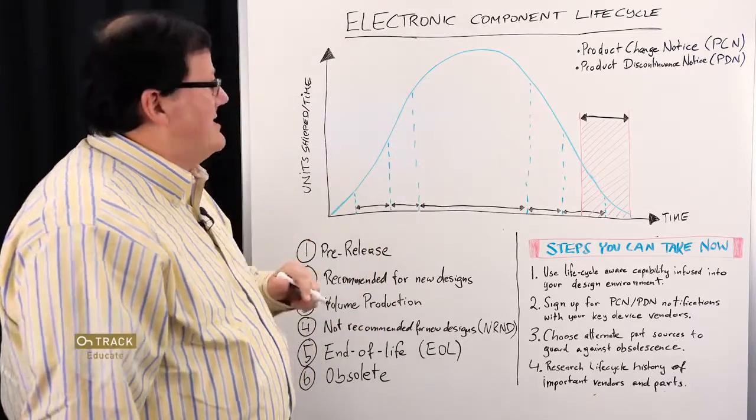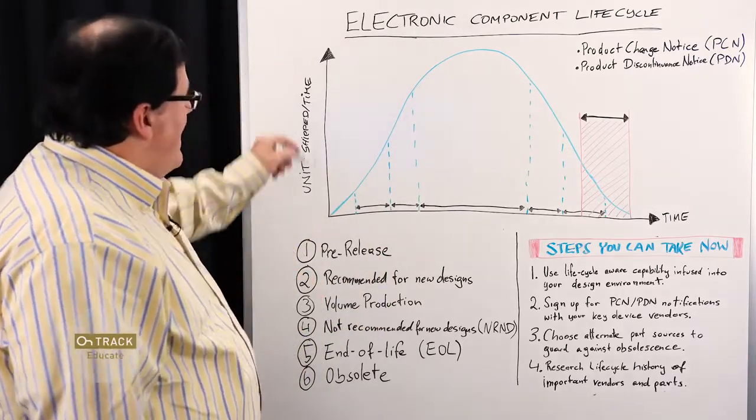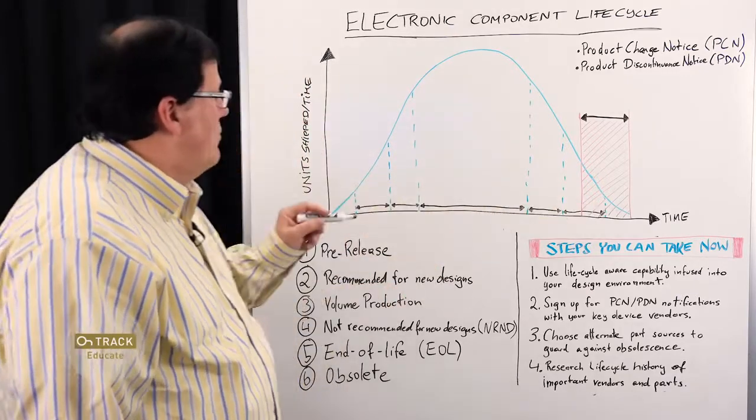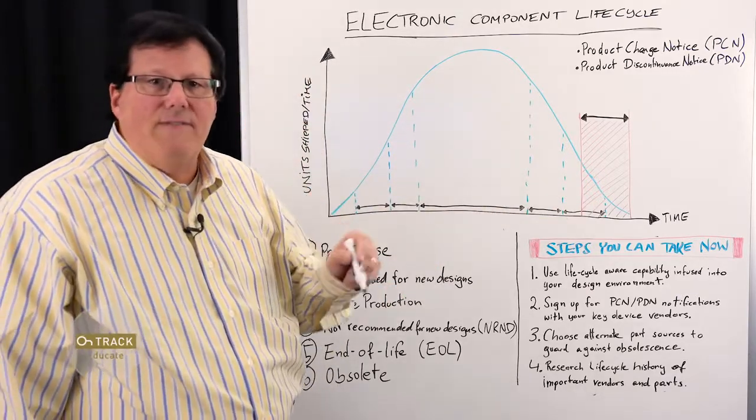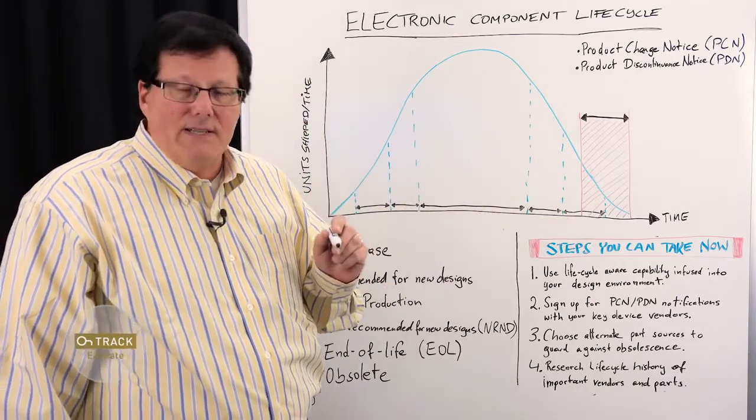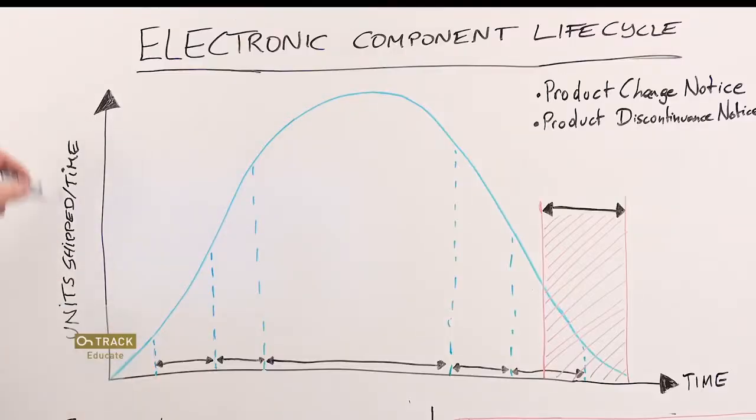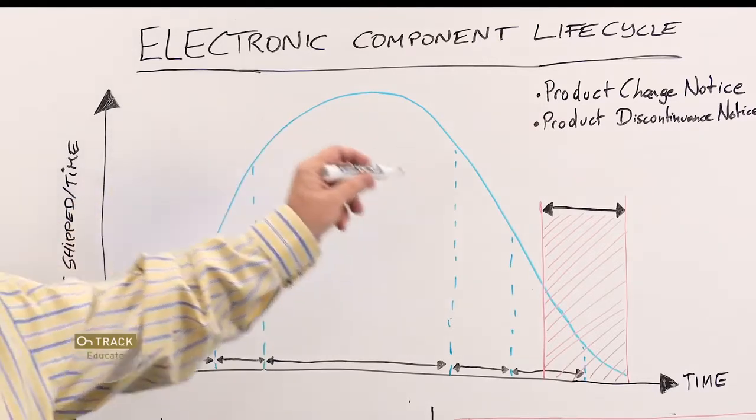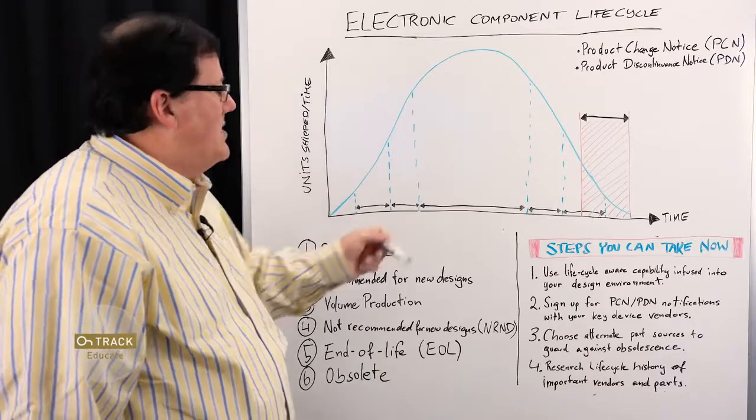So what I'm going to do is talk about component lifecycle. Now this graph that we see here, we will put the reference for this graph in the resources section below the video. This graph is the normalized component lifecycle. It's very similar to a bell curve and we're going to go through each of the steps of a typical lifecycle of a component.